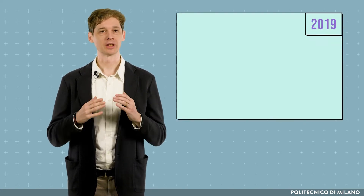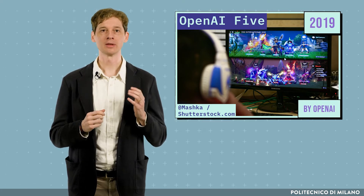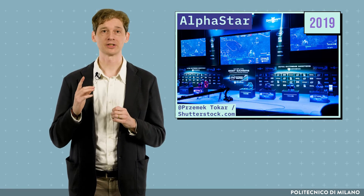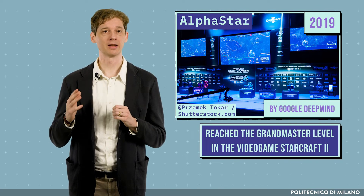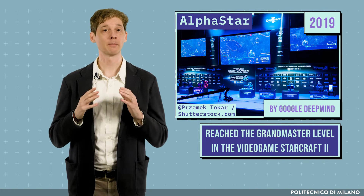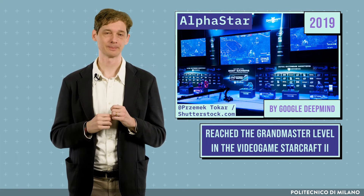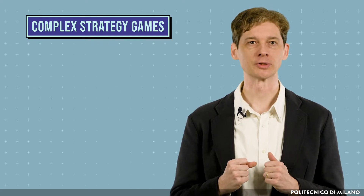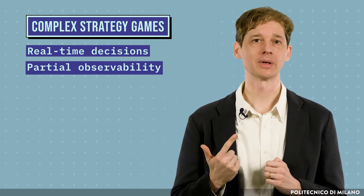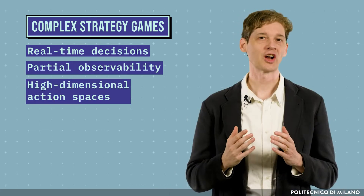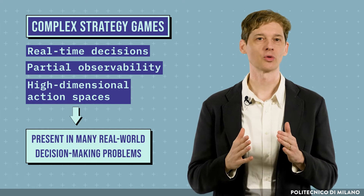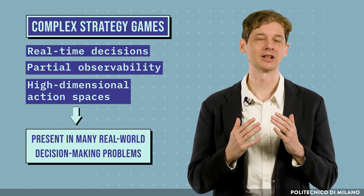More recently, other successes have been achieved through reinforcement learning. In 2019, OpenAI Five, developed by OpenAI, was able to defeat a team of world champions in the video game Dota 2. In the same year, AlphaStar, developed by Google DeepMind, reached the grandmaster level in StarCraft II, ranking among the top 0.2% of human players. These are two very complex strategy games that present several challenges for AI algorithms, such as real-time decisions, partial observability, and high-dimensional action spaces. These characteristics are present in many real-world decision-making problems, and these recent successes show that reinforcement learning algorithms could help us make complex decisions in the near future.